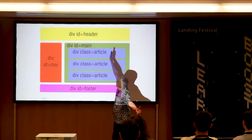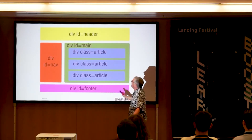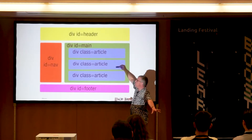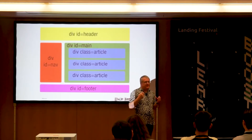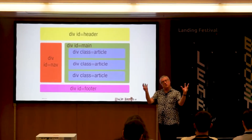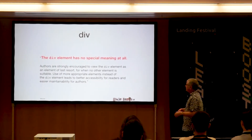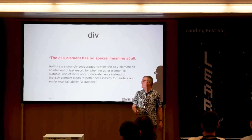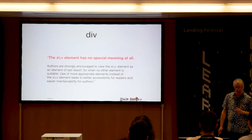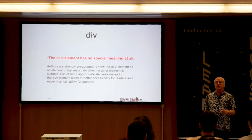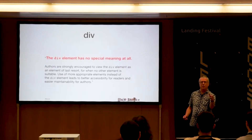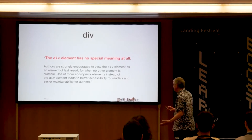You've all seen this in HTML4: 'div id equals nav,' 'div id equals header,' 'div id equals main,' and 'div id equals footer.' In HTML4, you didn't have a semantic to distinguish between these elements of the page. But in HTML5 we do. The spec says: 'Authors are strongly encouraged to view the div element as an element of last resort — use of more appropriate elements instead of the div element leads to better accessibility for readers and easier maintainability for authors.' So it means you get to go to the pub earlier, which is your human right as a developer.